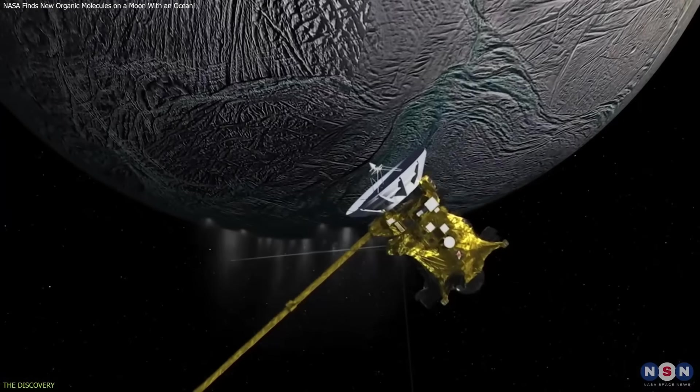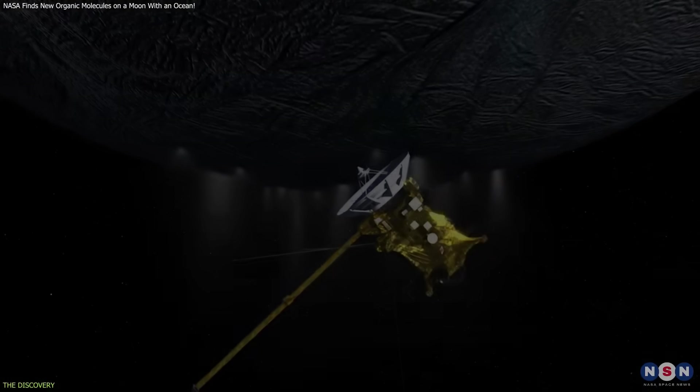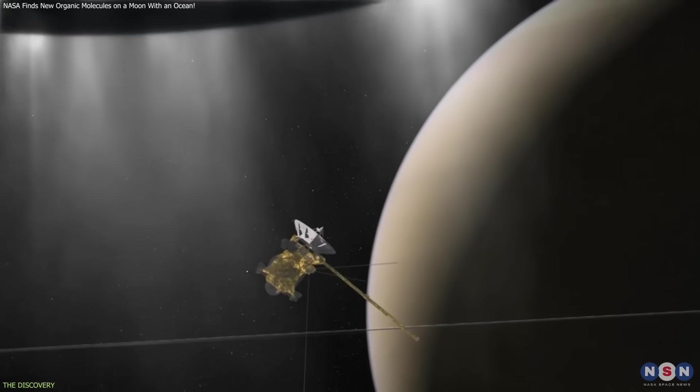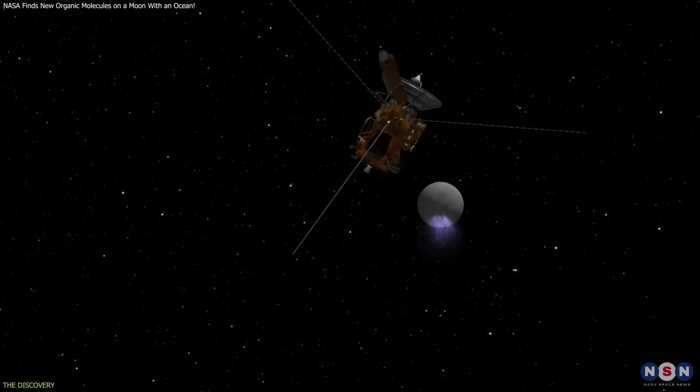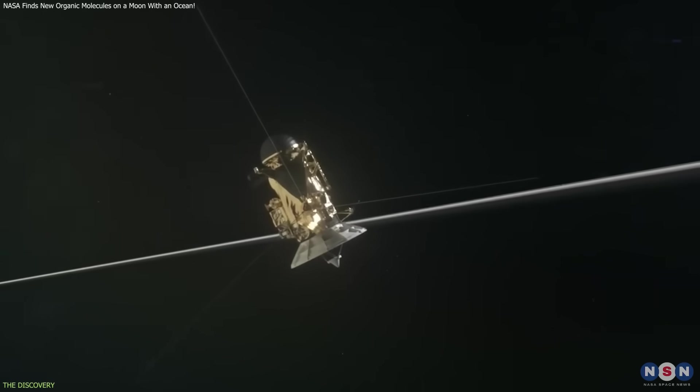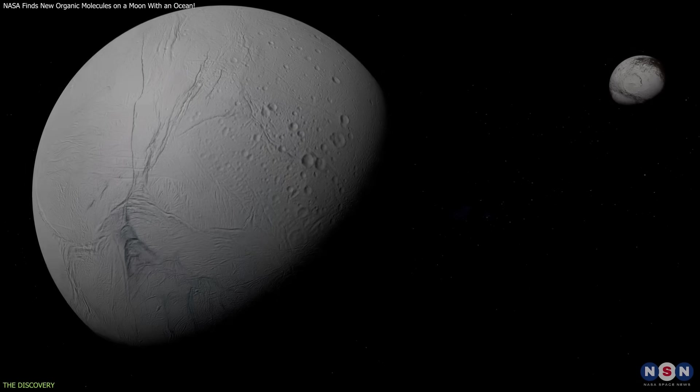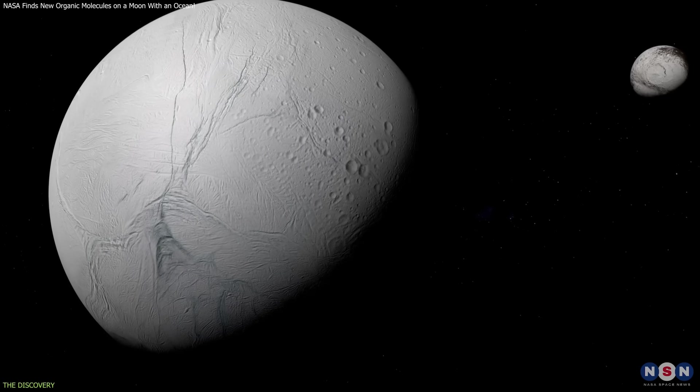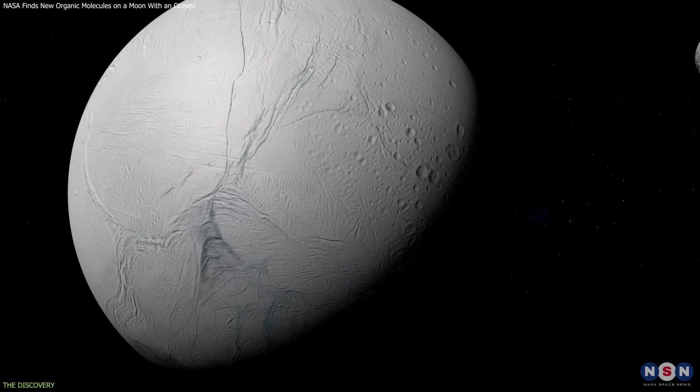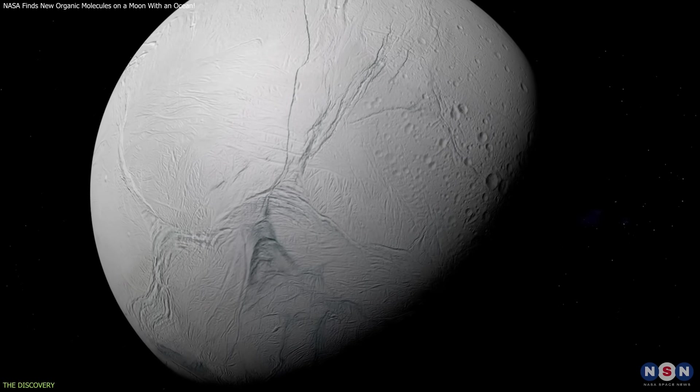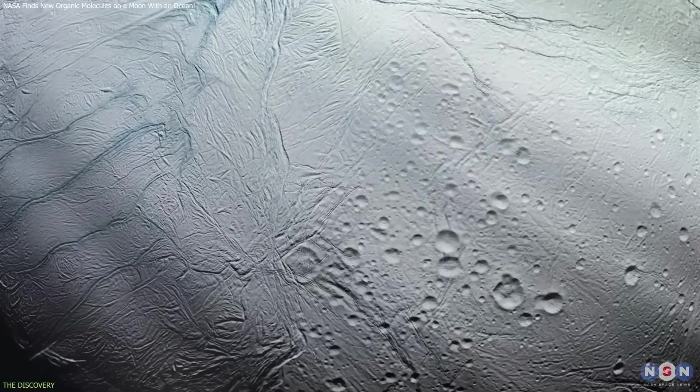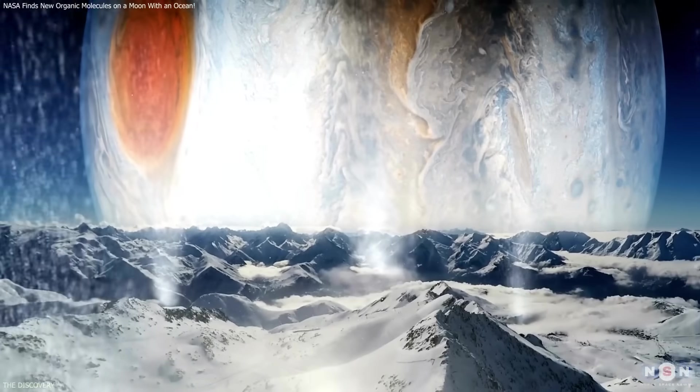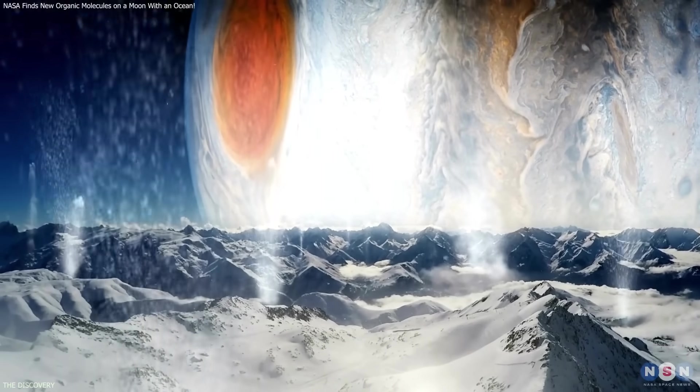Cassini's 2008 flyby of Enceladus remains one of the most scientifically productive encounters of the entire mission. While the spacecraft passed the moon many times, this particular flyby brought it unusually close, only about 13 miles above the south polar region. This area is lined with long fractures known as the Tiger Stripes, where the crust is thin and warm enough for water vapor and ice grains to escape from the subsurface ocean.